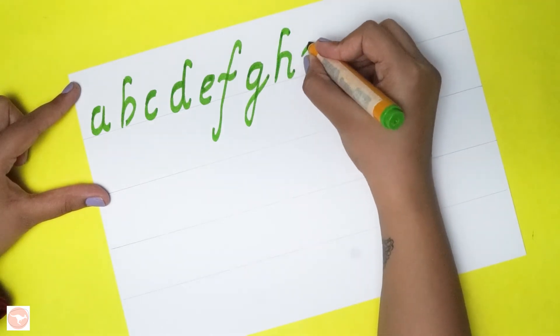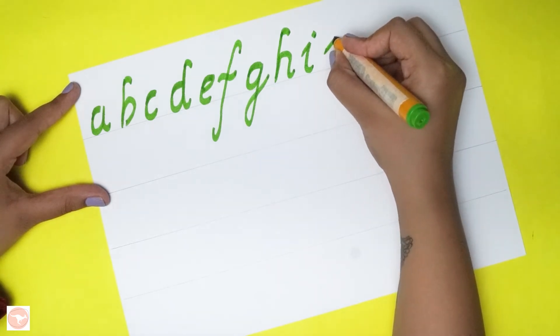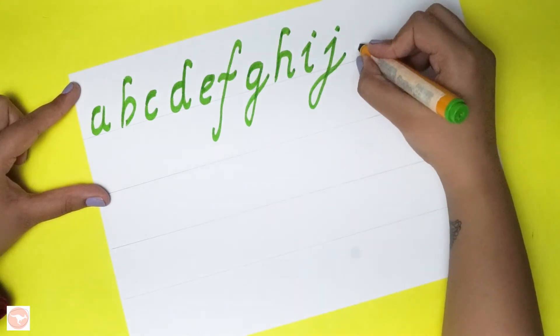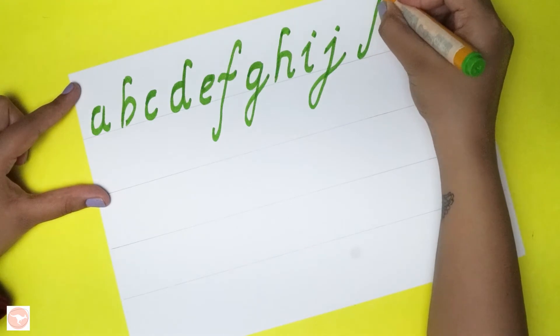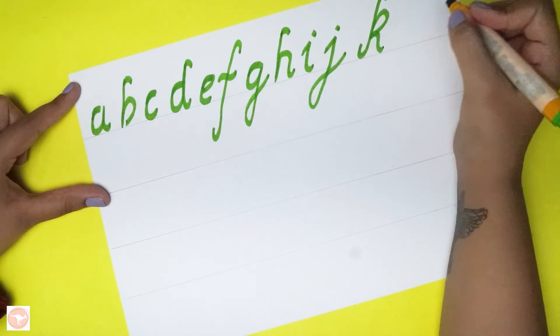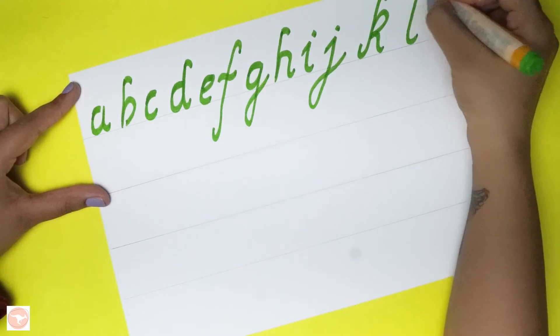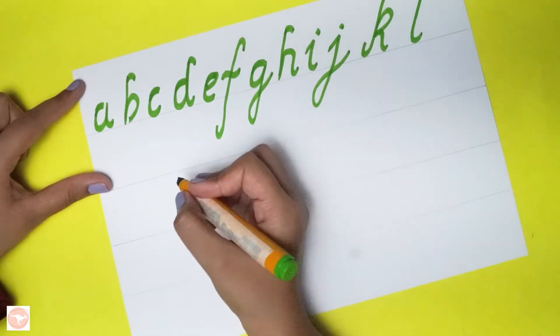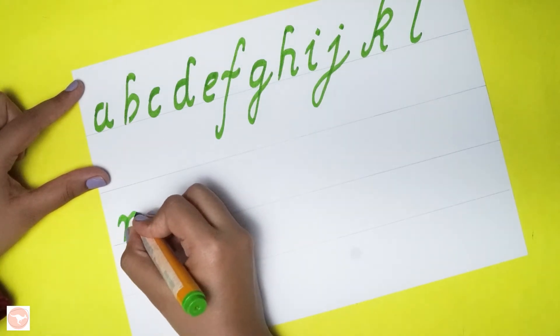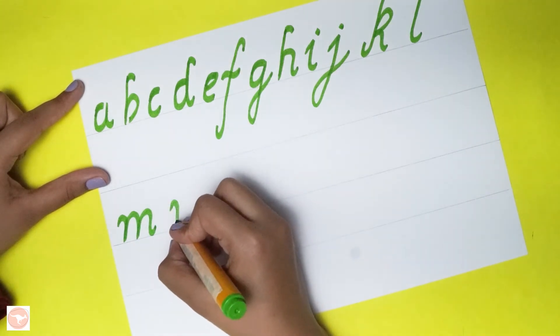H, I, J, K, L. Now for M, one, two, three in a small stroke. Same for N.